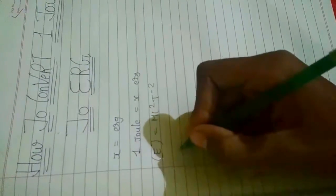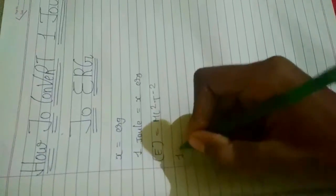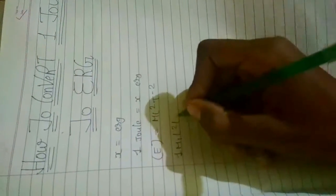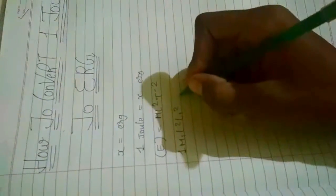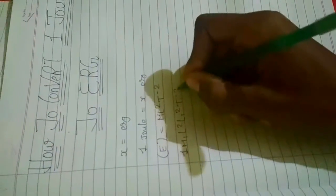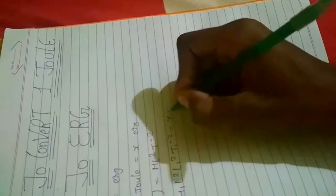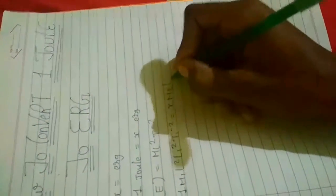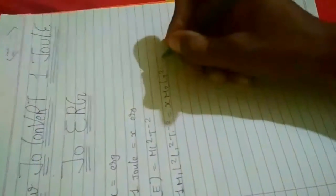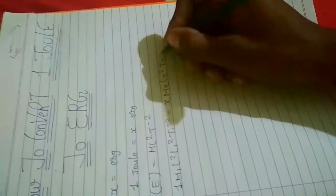So by putting values we can get m₁ l₁ squared t₁ to the minus 2 equals x m₂ l₂ squared t₂ to the minus 2.